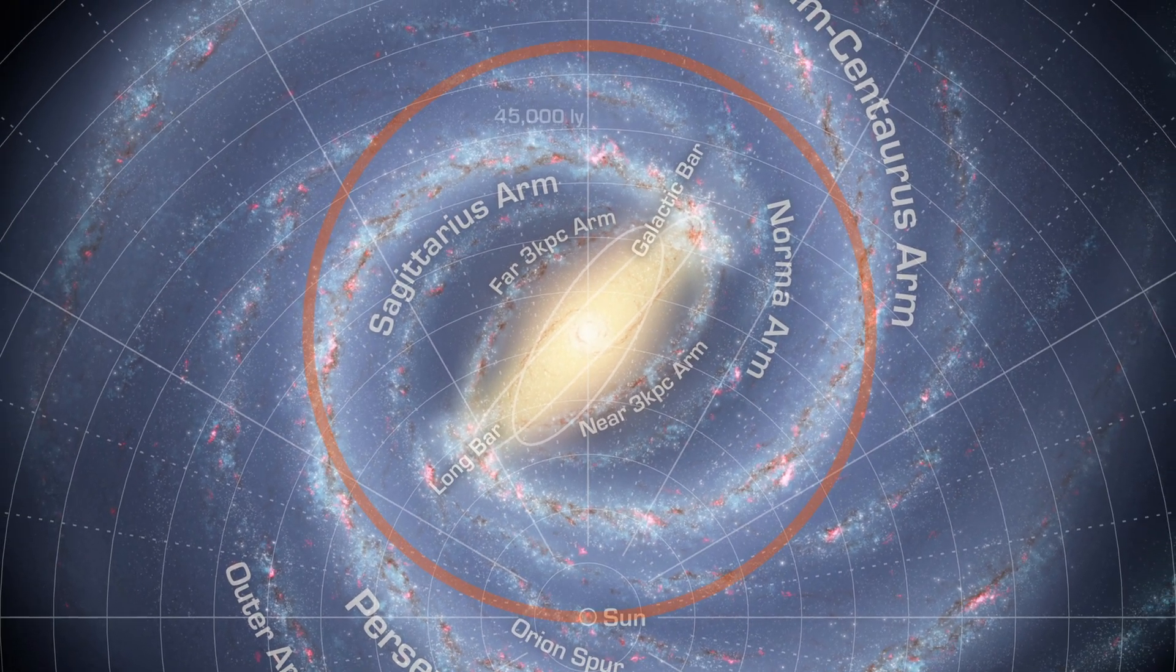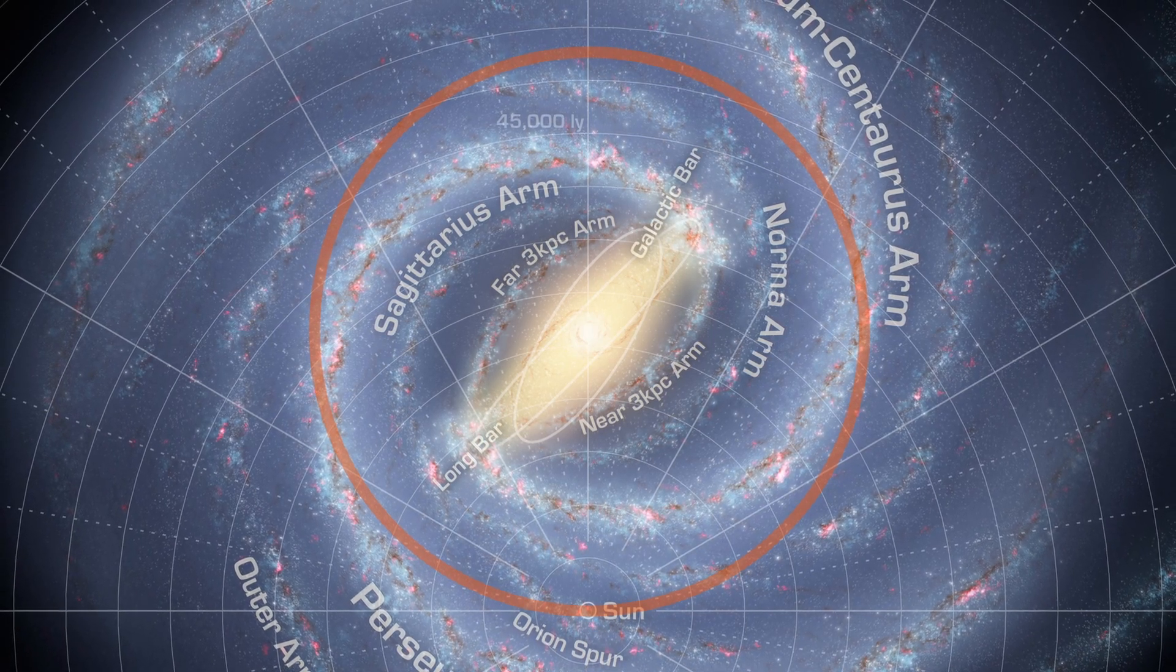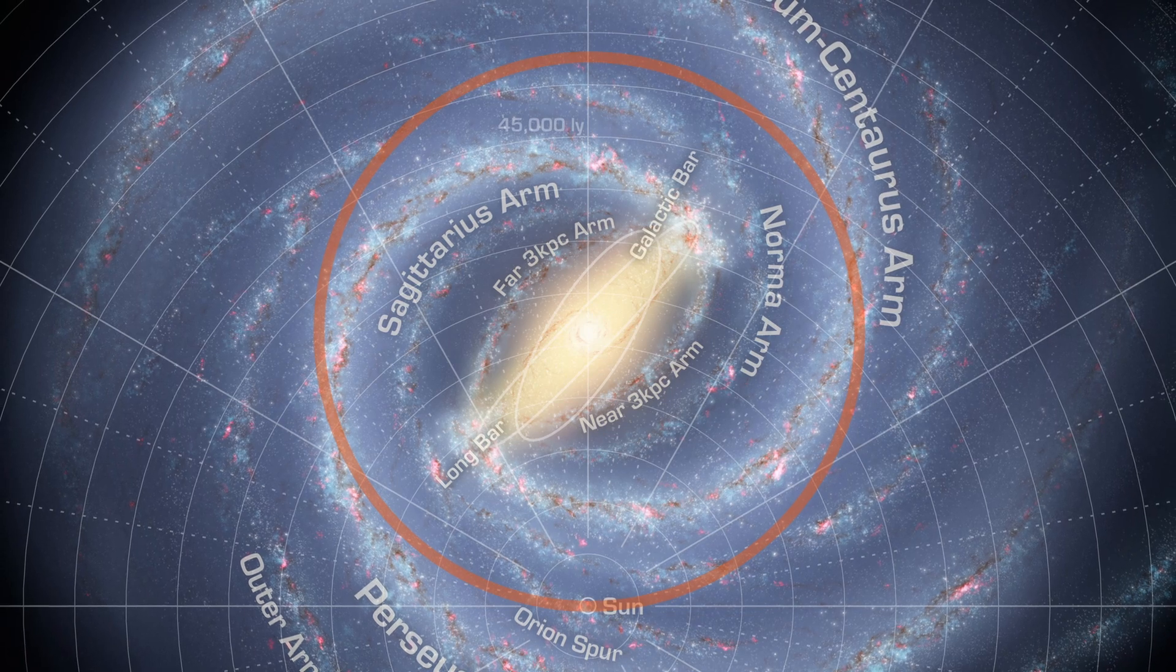Instead, it's circular and rotates just at the right speed—the same rate as the spiral arms—meaning we very rarely have to cross one.